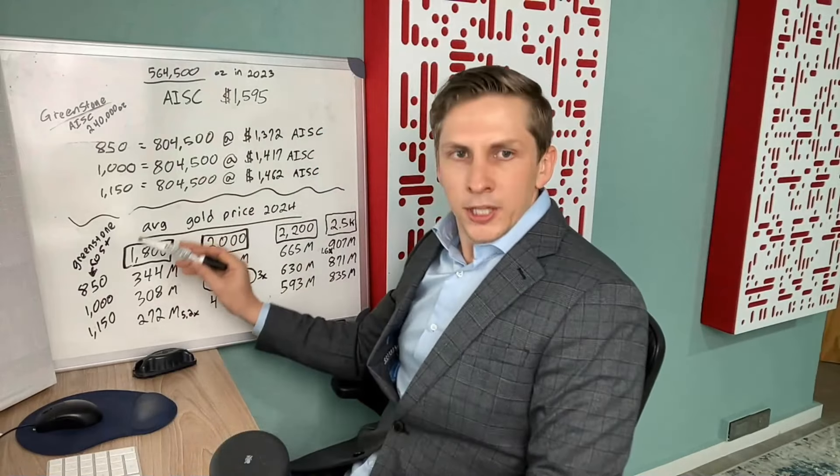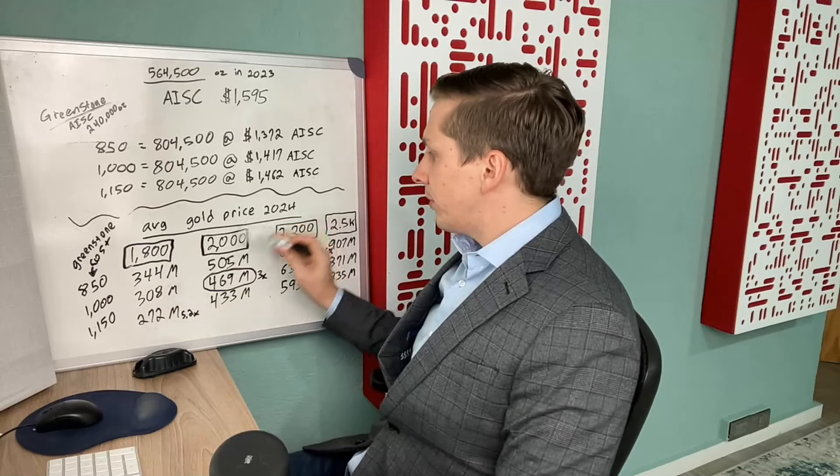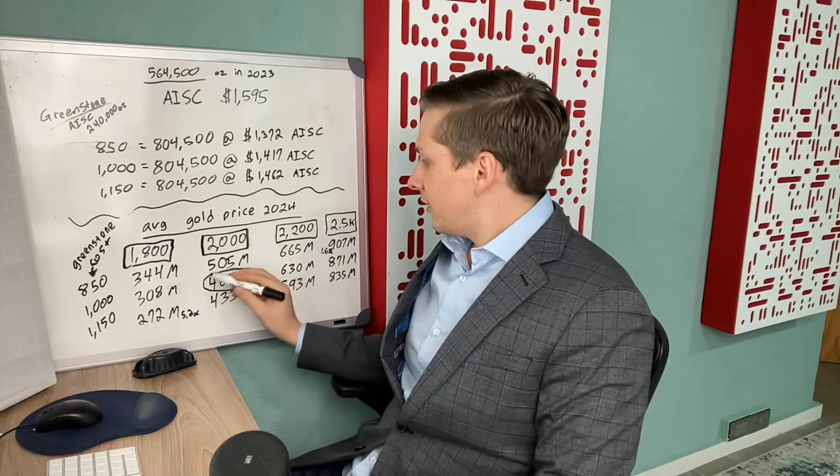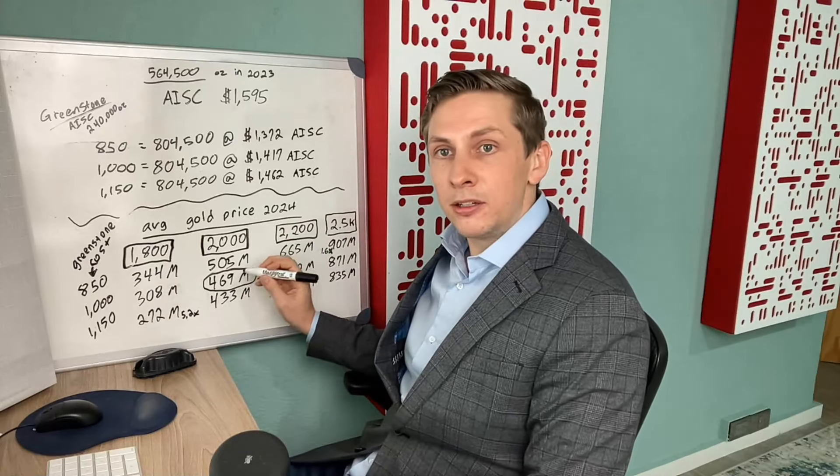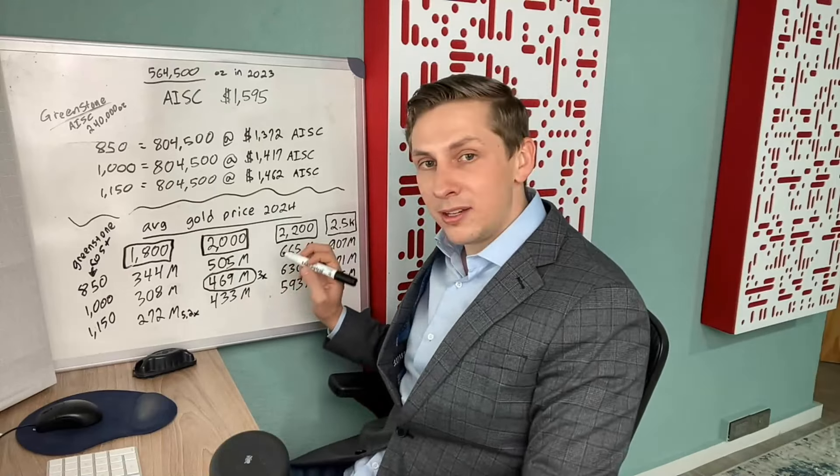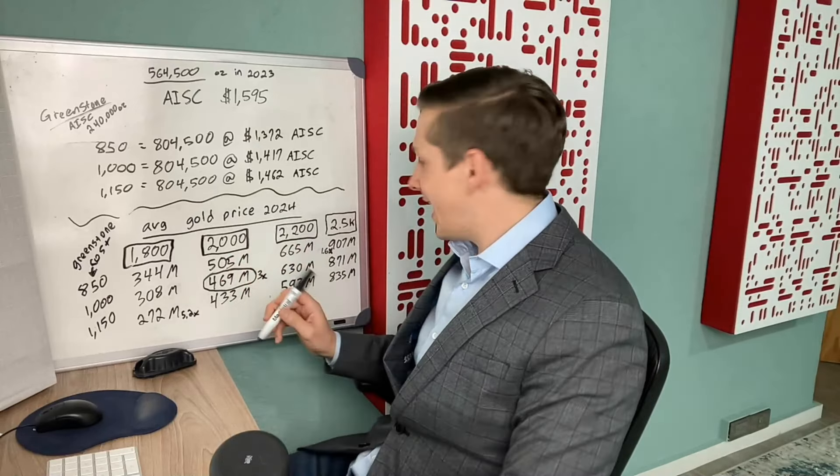Now let's say the Greenstone costs come in at $1,000 an ounce and the gold price for 2024 is $2,000 an ounce. They're going to be making $469 million in cash flow per year after the Greenstone mine is in full production, and it will take a little bit for that to happen, which would put the cash flow multiplier at three times the company trading at three times future cash flow.